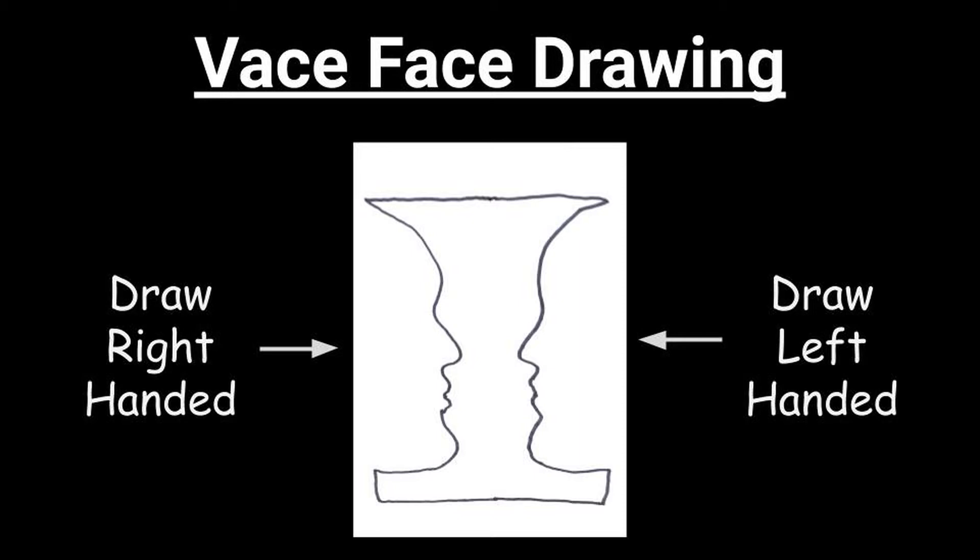Positive space is the active space. Negative space would be like the holes, the empty space. Alright, good luck drawing the vase-face. Practice it a few times.